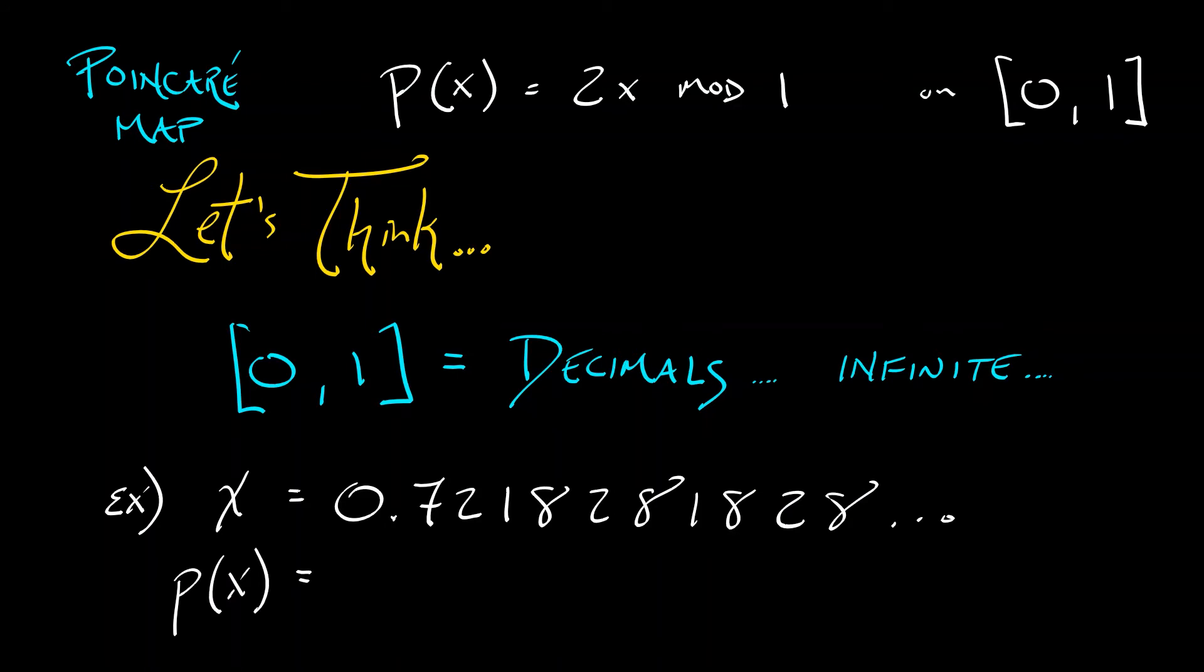Let's say its decimal expansion is 0.7218281828, maybe it's an eventually repeating decimal. That's cool, but then what is p(x)? What happens? Well I have to multiply by two, so I think I can do that. The 0.7, that's like a 1.4, and then the 2, 1.44, 3, 6, maybe a 5.